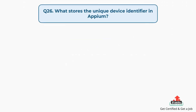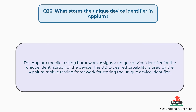Question number 26: What stores the unique device identifier in Appium? The Appium Mobile Testing Framework assigns a unique device identifier for the unique identification of the device. The UDID desired capability is used by the Appium Mobile Testing Framework for storing the unique device identifier.